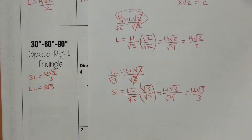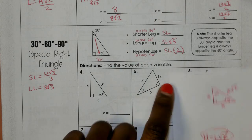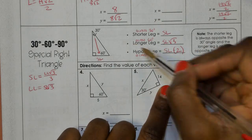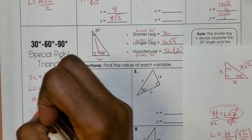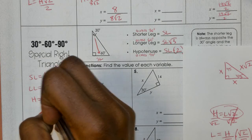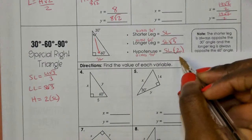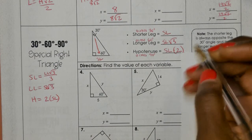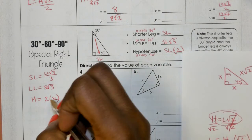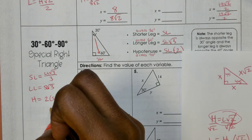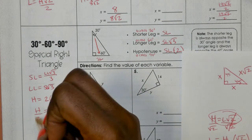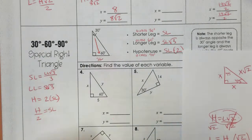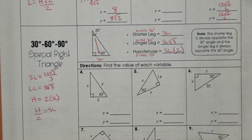Using the second equation — hypotenuse equals 2 times the short leg — if we solve for the short leg, we get short leg equals hypotenuse divided by 2. We can leave the 2 in the denominator since it's not a radical. So these are our four equations, and it depends on what you're looking for which one you use.